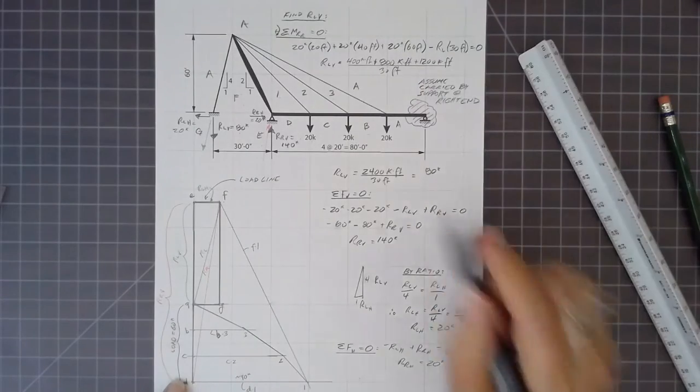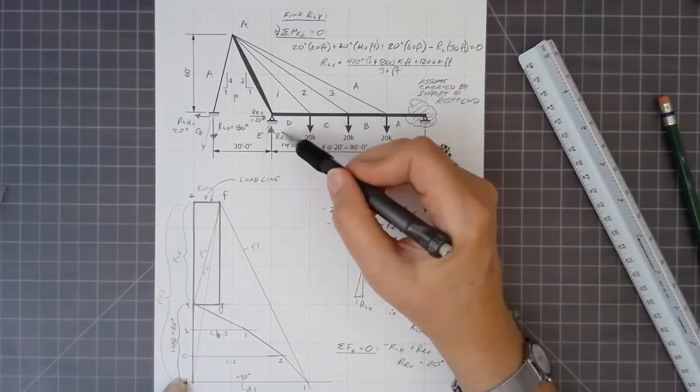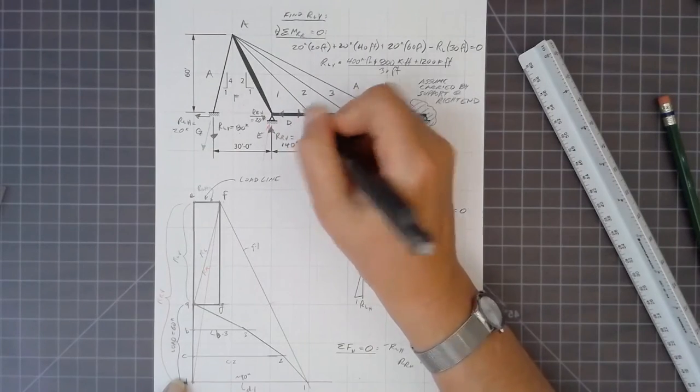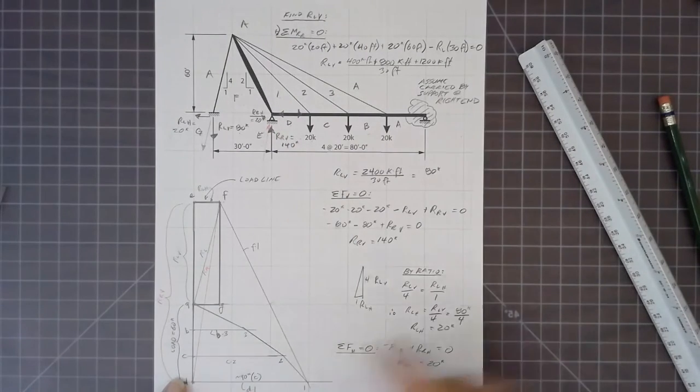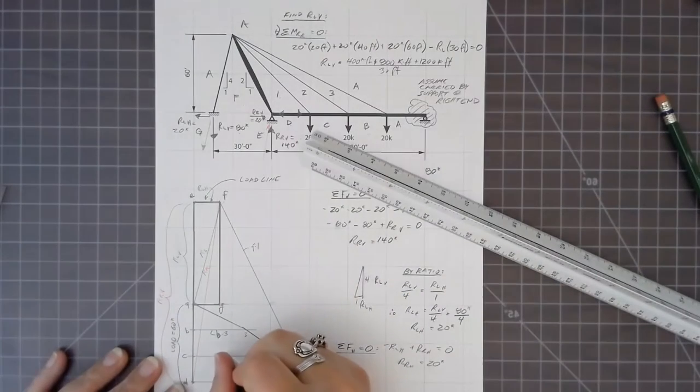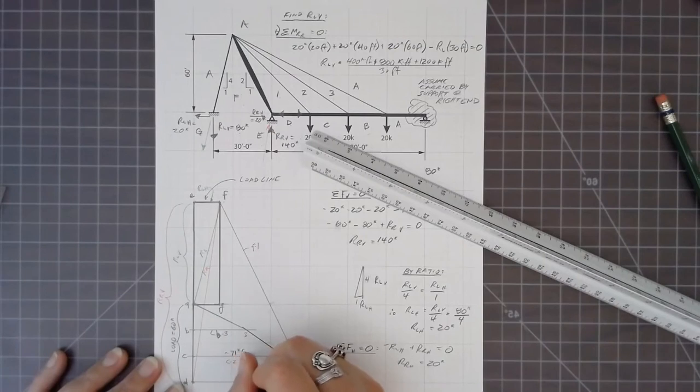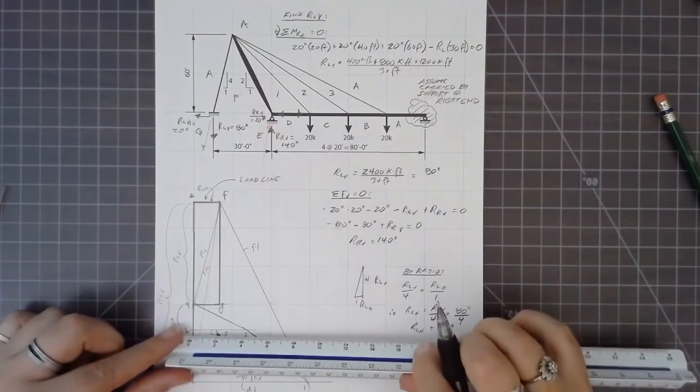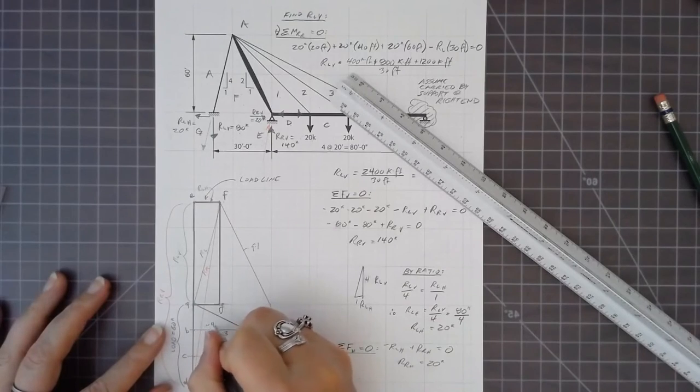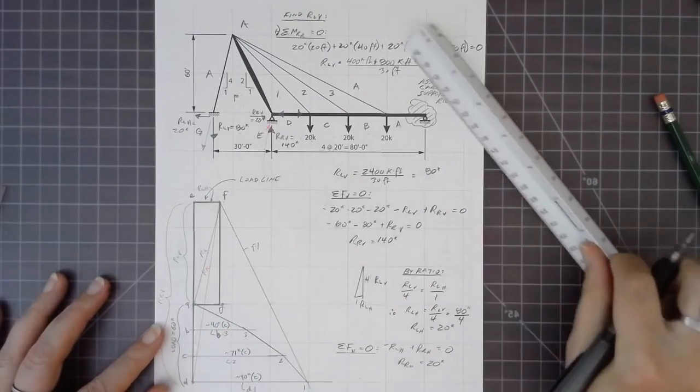So now we can read the force magnitudes. D1 comes out to about 90 kips, that's compressive. C2 comes out to 71 kips, also compressive. And B3 comes out to about 40 kips compressive.